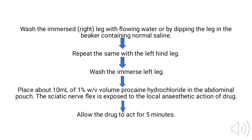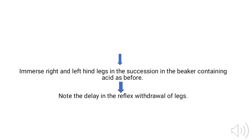Then place about 10 ml of 1% w/v procaine hydrochloride in the abdominal pouch. The sciatic nerve plexus is exposed to the local anesthetic action of the drug. Allow the drug to act for 5 minutes. After that, immerse the right and left hind legs in succession in the beaker containing acid as before, and note the delay in the reflex withdrawal of the leg.